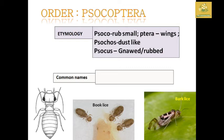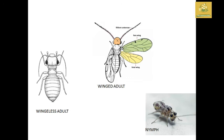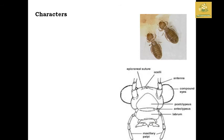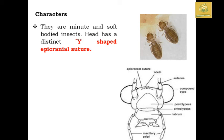Looking at Psocoptera, they include winged adults, wingless adults, and nymphs. They are very small and soft-bodied insects.